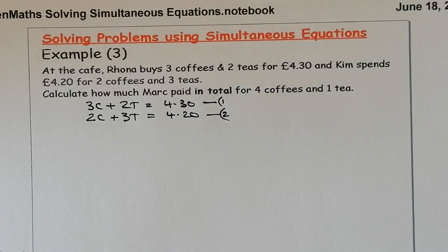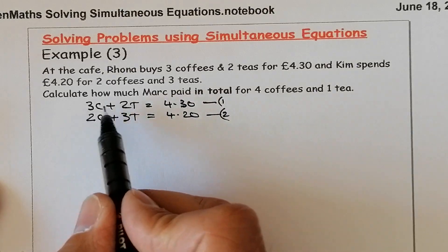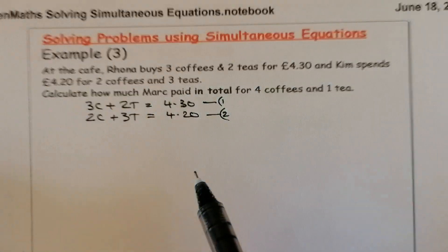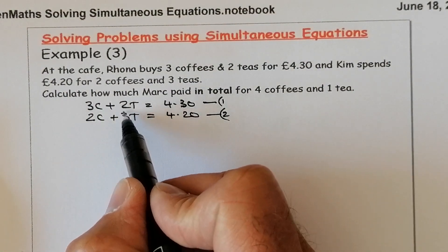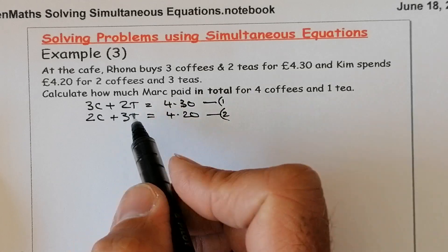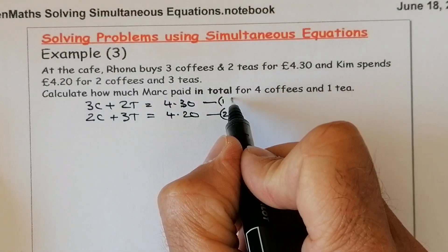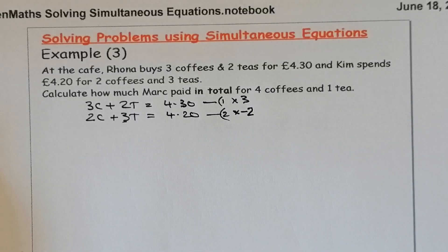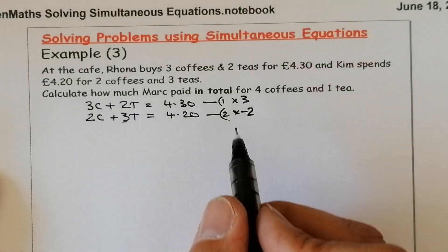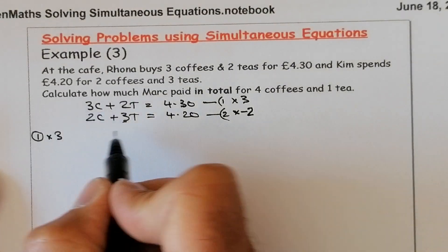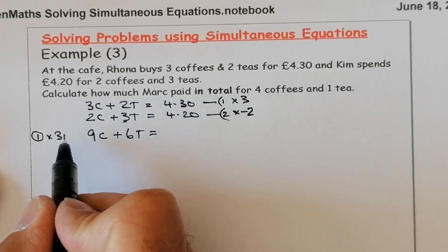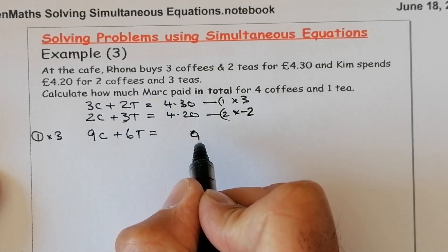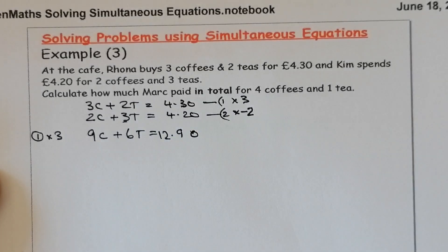So Rona's equation: 3C plus 2T equals £4.30 — equation 1. Kim's equation: 2C plus 3T equals £4.20 — equation 2. We'll work through this the same way. To eliminate the T variable, I'm going to multiply equation 1 by 3: that gives 9C plus 6T equals £12.90, which becomes equation 3.